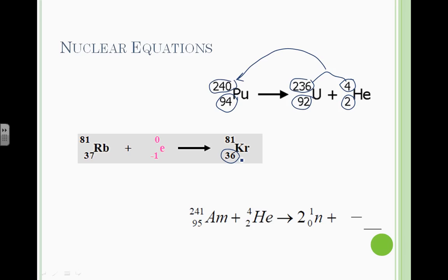Since the atomic number is 36, this element is now krypton. It's no longer rubidium. Because of that, we can predict an unknown in a nuclear reaction.